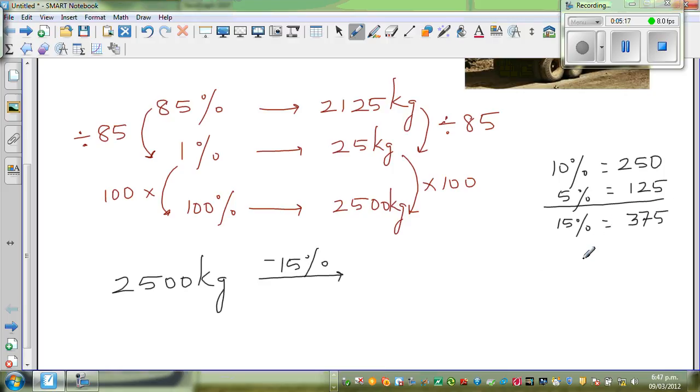375. So now I can do the working: 2500 minus, I'm going to take away 300 first. If you take away 300, you get 2200, and then I take away 75. So if I take away 75, I get 2125 kg, and that's what the answer was.